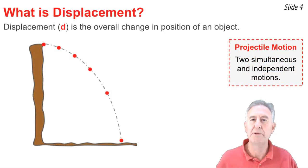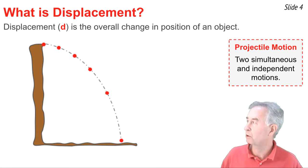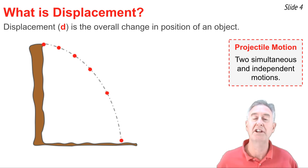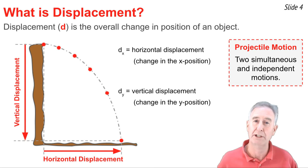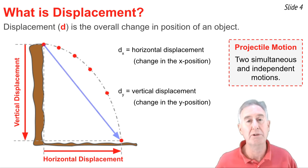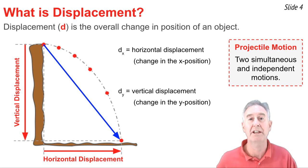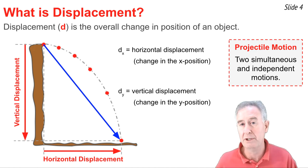In physics, the term displacement refers to the overall change in position of an object. When it comes to projectiles, we often think in terms of horizontal displacement and vertical displacement. The horizontal displacement is the overall change in the horizontal position of the object, whereas the vertical displacement is the overall change in the Y position of an object. What we never do in physics when discussing projectiles is we never think in terms of the diagonal displacement. We think of projectiles as exhibiting these two independent yet simultaneous motions, a horizontal and a vertical. And the diagonal is simply the result of it.